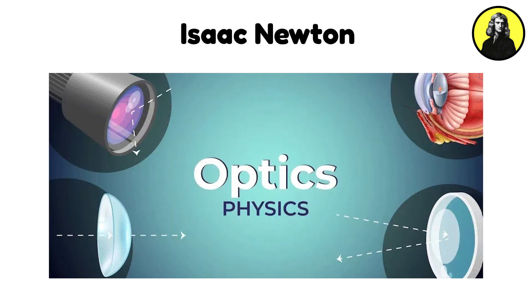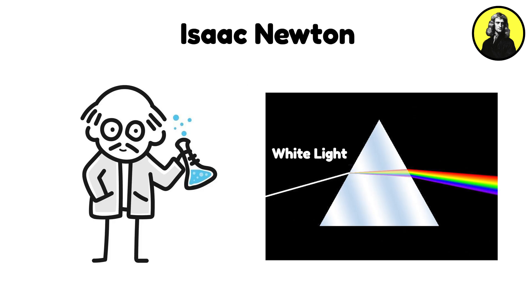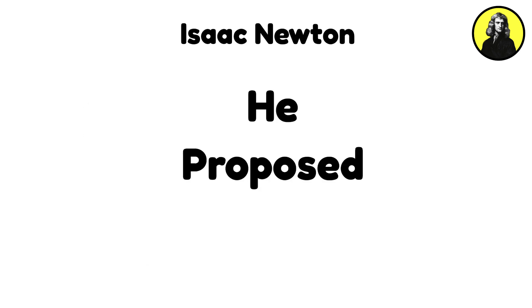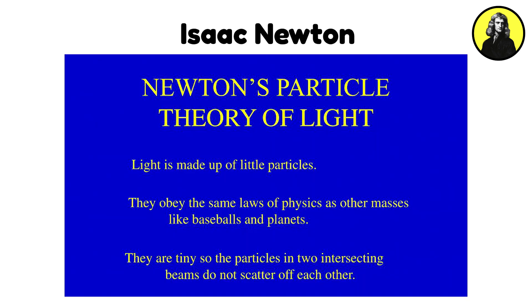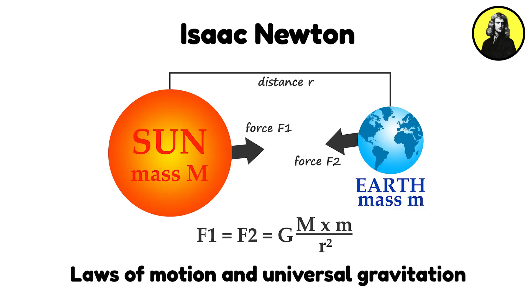Through meticulous experiments, Newton demonstrated that white light consists of a spectrum of colors, which can be observed when passed through a prism. He proposed the particle theory of light and constructed the first practical reflecting telescope, enhancing astronomical observations by reducing chromatic aberration.